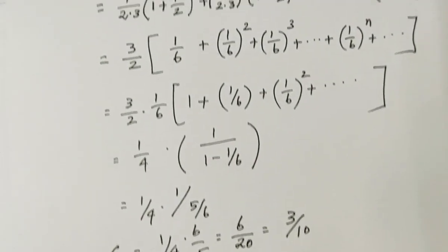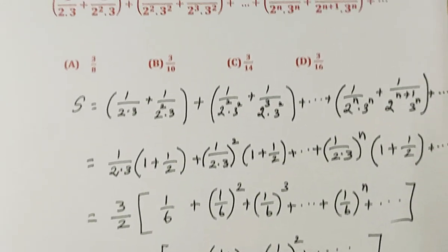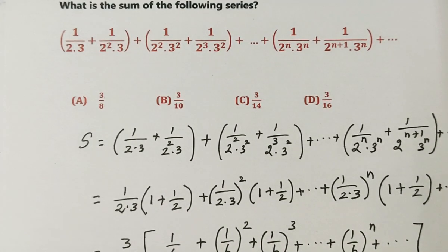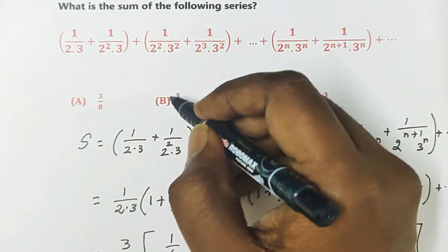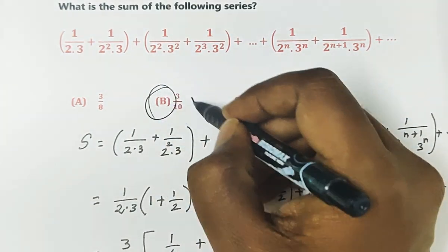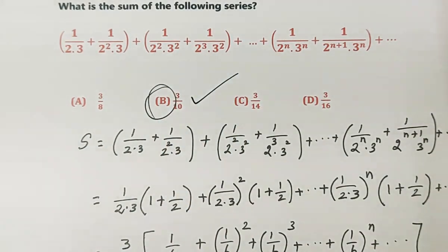So the sum of this infinite series is 3/10. The answer is option B.